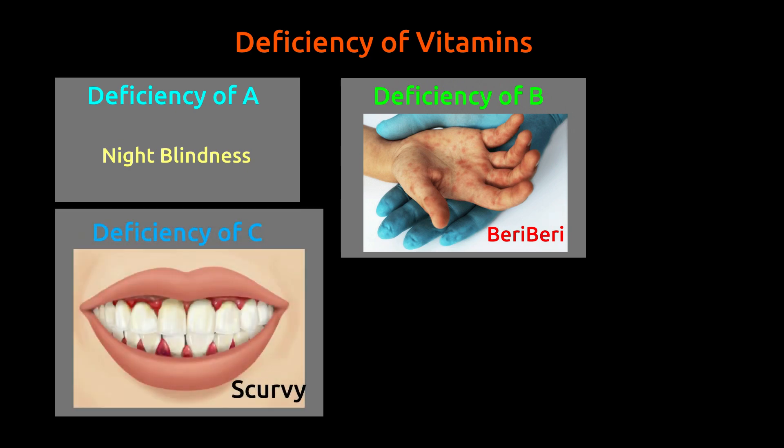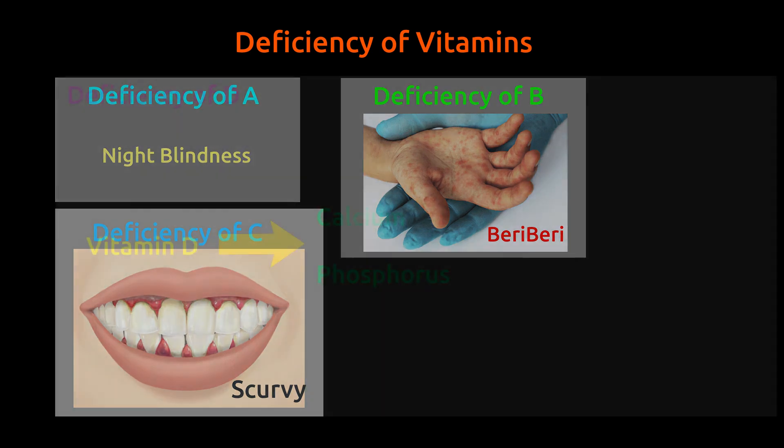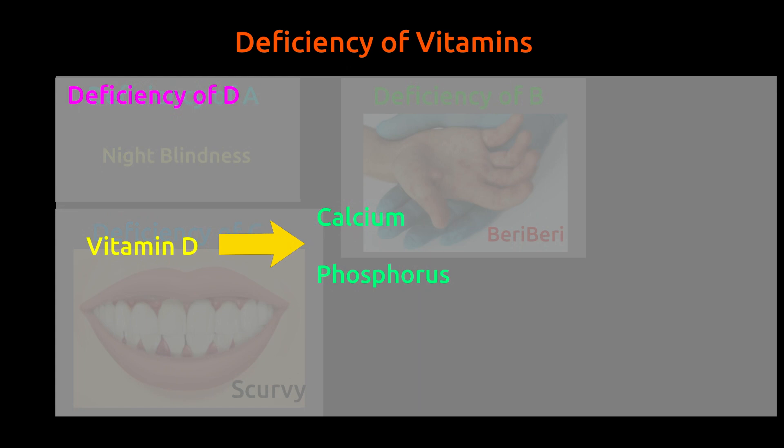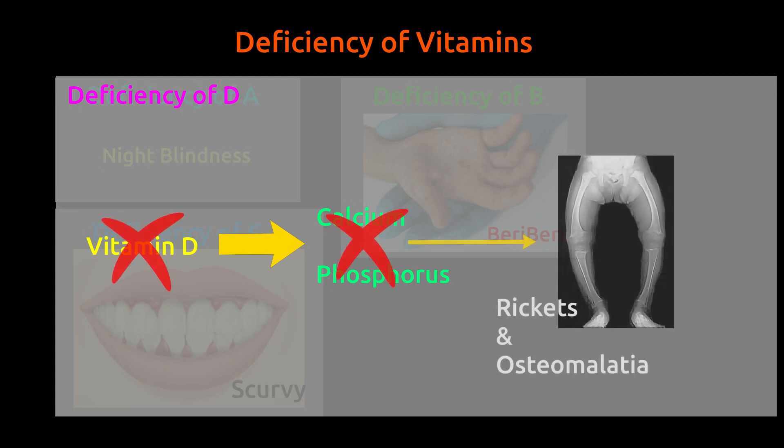Scurvy is caused by deficiency of vitamin C. In this disease, gums start bleeding. Vitamin D deficiency leads to rickets, which makes bones flexible and weak.